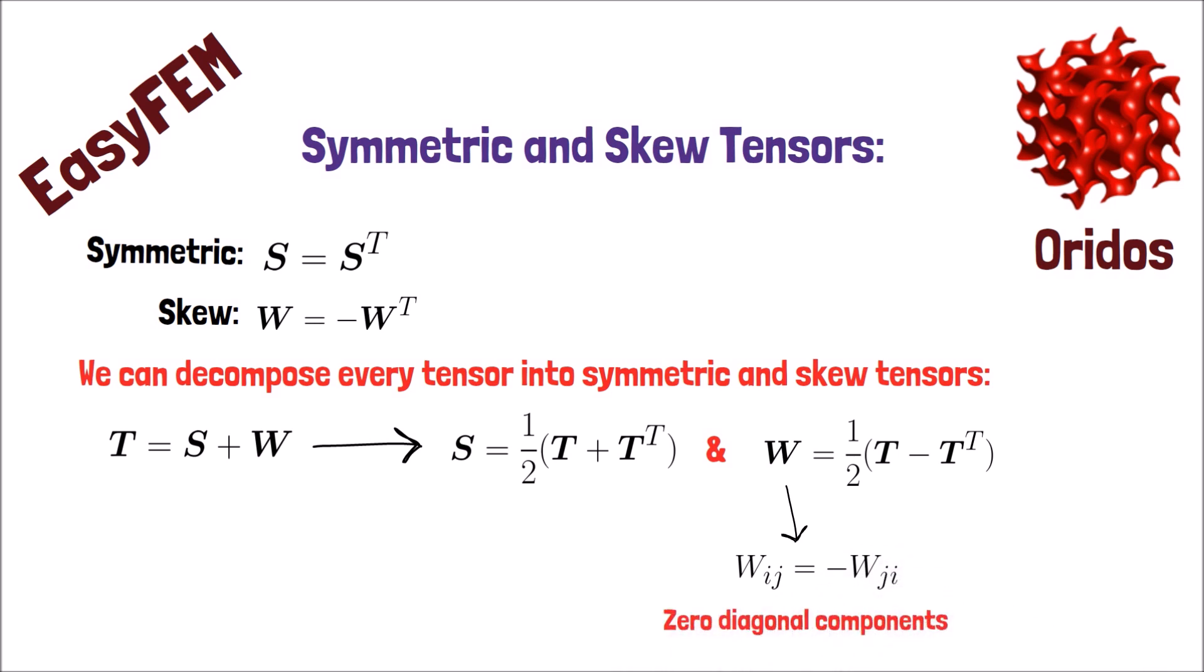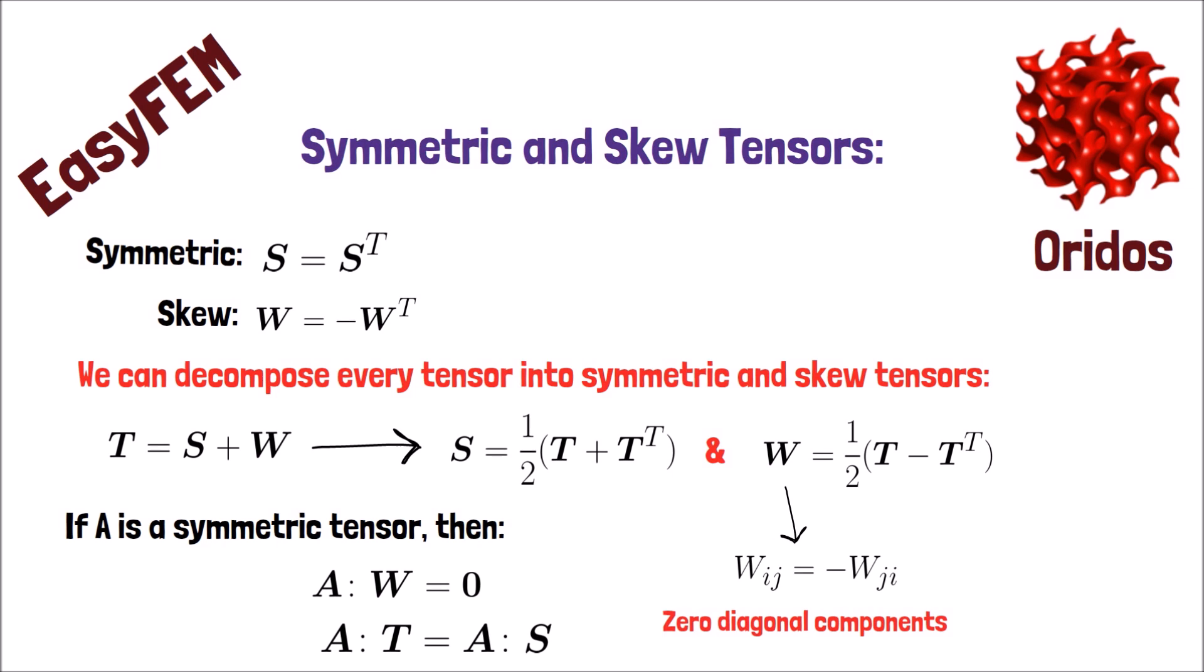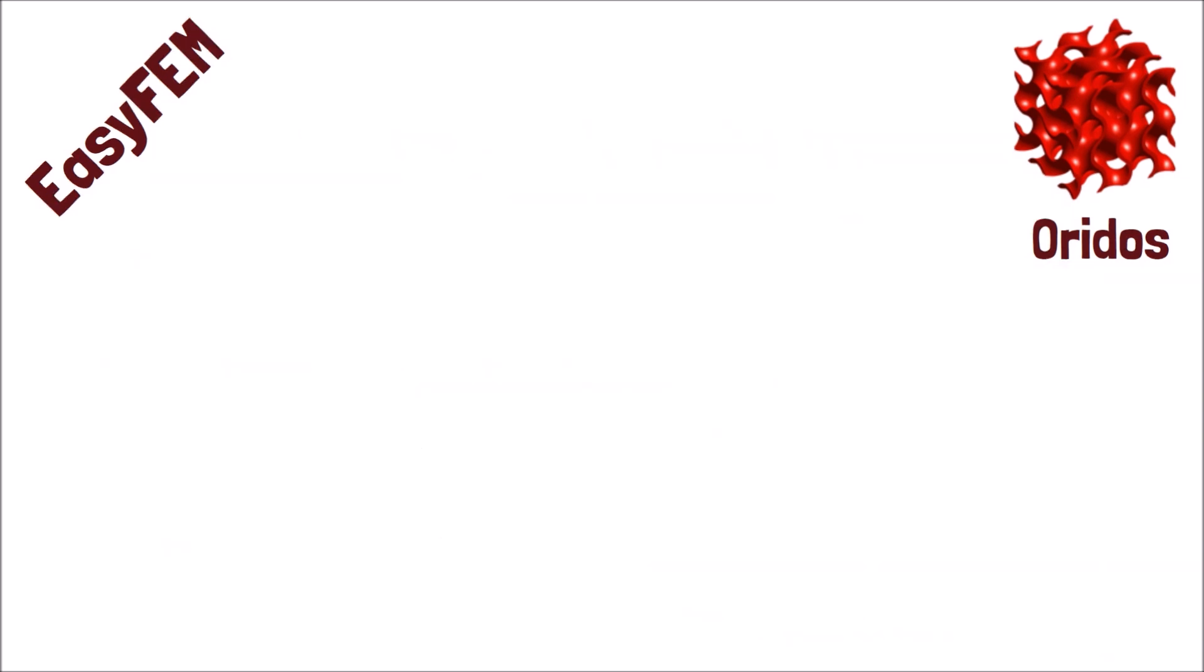Another nice feature, if A is a symmetric tensor, then the double dot product of A and W will be zero, and the double dot product of A and T will be the same as A and S. Here, I am giving another example of decomposing a second-order tensor into symmetric and skew-symmetric tensors.